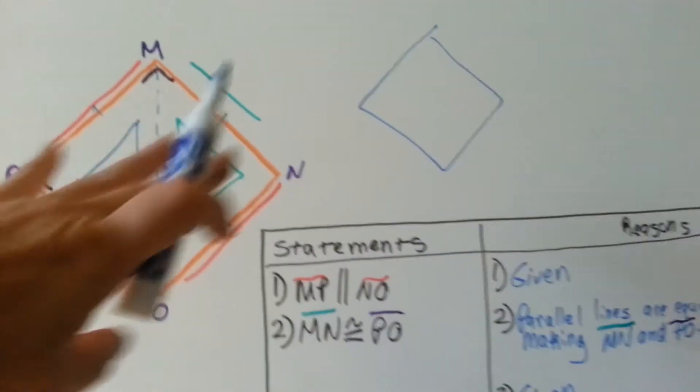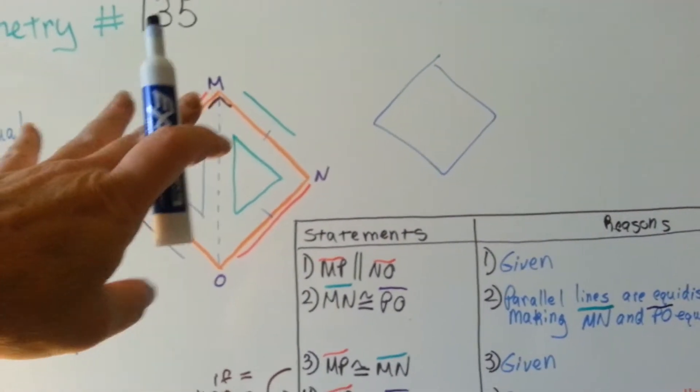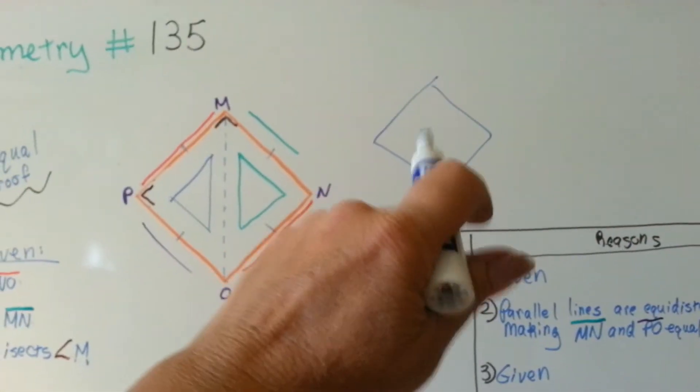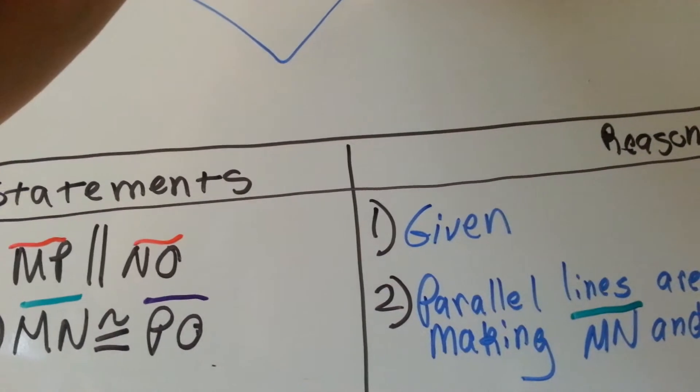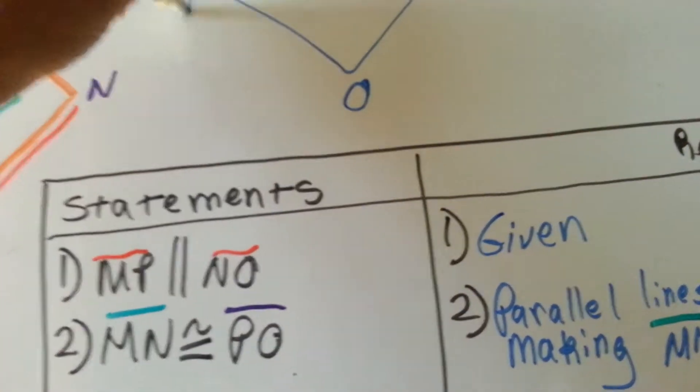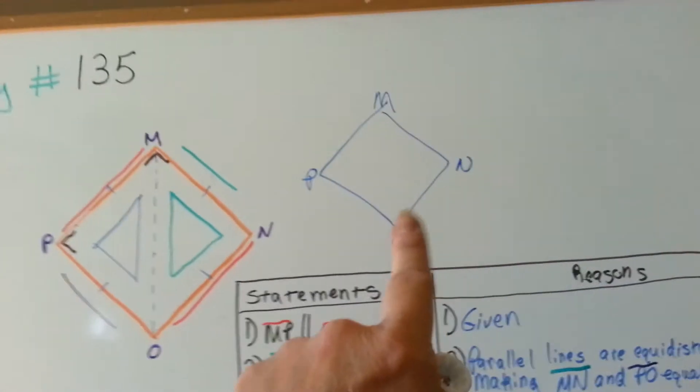But I ended up having to draw it up and color it up to explain this part. So imagine that we only have this and this is how we're starting.